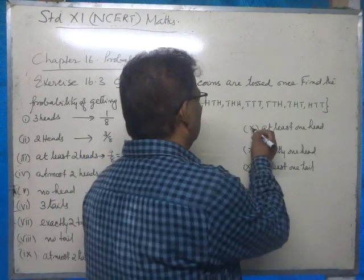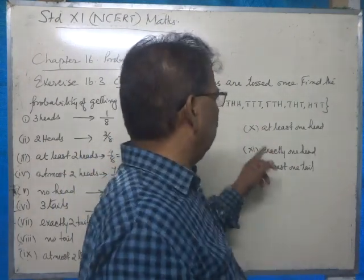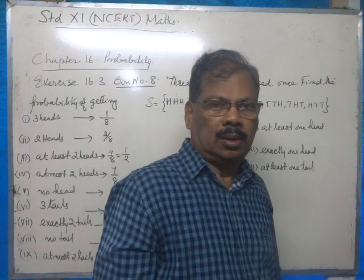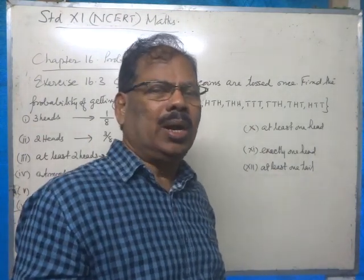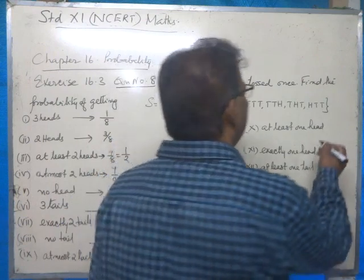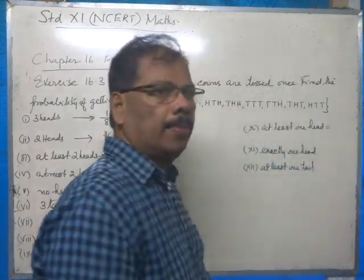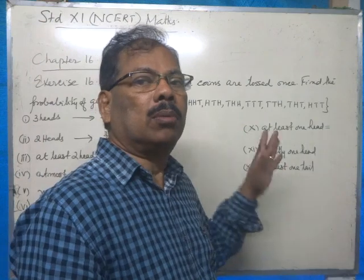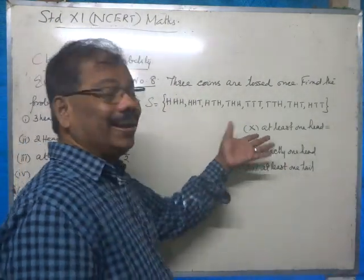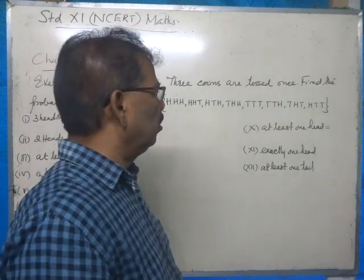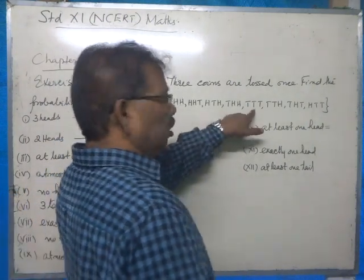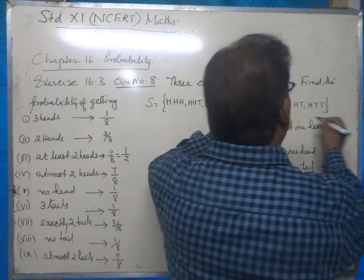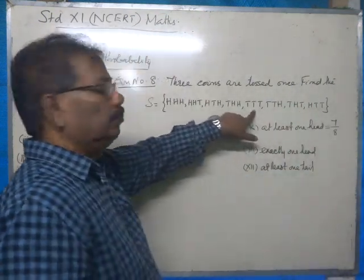Part ten: the probability of getting at least one head. There should be at least one head. We exclude the occurrence T, T, T since it has no heads. In all the other seven occurrences we get at least one head, so the answer is seven by eight.